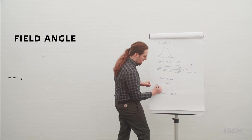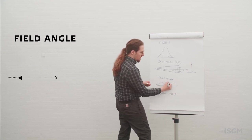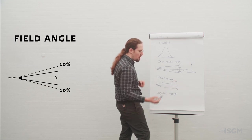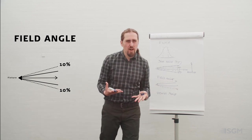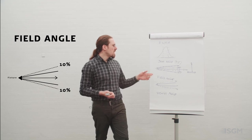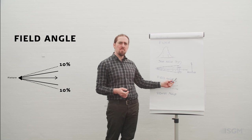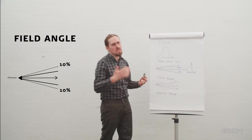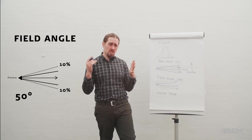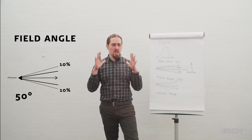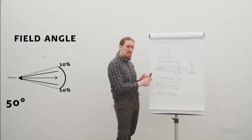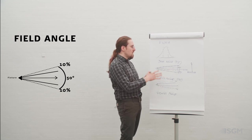We measure this with the field angle. So beyond the beam angle, you have the field angle — the remaining light until you reach 10% of the original output, always using the center as the reference for maximum output. If you have a fixture where the field angle is close to the beam angle — say 50 degrees versus 45 degrees — that means your luminaire is very controllable, with almost no stray light or halos around it.